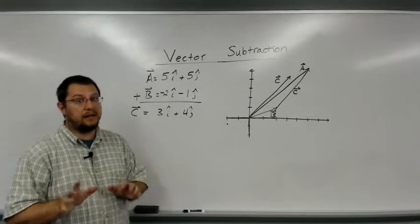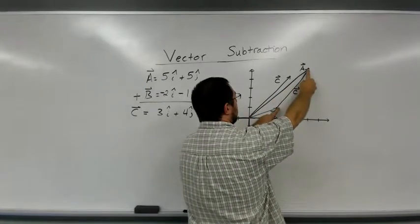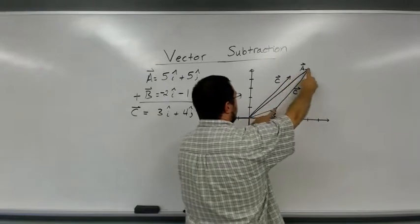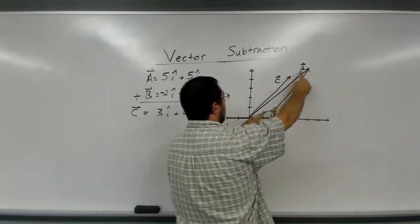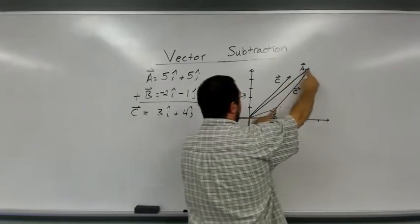They should be, in theory, they should be exactly the same. But if I displace this vector, I should get this vector. These should be the same and they should be at the same angle.